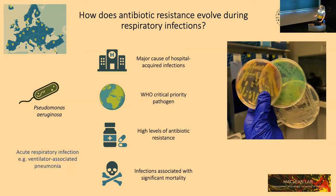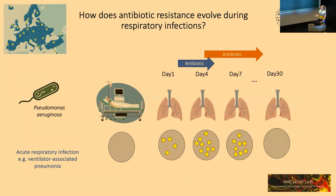We were specifically interested in acute respiratory infections — short-term infections rather than chronic long-term infections — an example being ventilator-associated pneumonia. Patients were coming into the ICU on ventilators and enrolled in the study. Their lungs were sampled every couple of days for up to 30 days. We looked at a collection of six to twelve Pseudomonas isolates per patient per time point, which differs from the standard clinical microbiology approach of looking at one isolate per patient per time point. We were really interested in the population biology of resistance evolution.